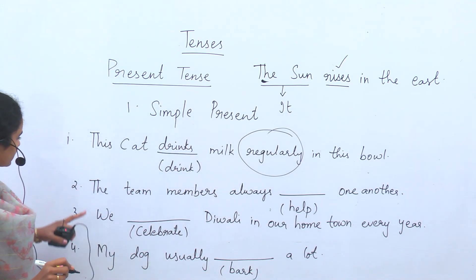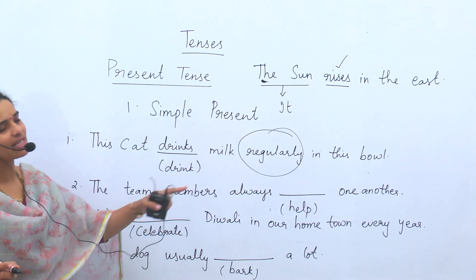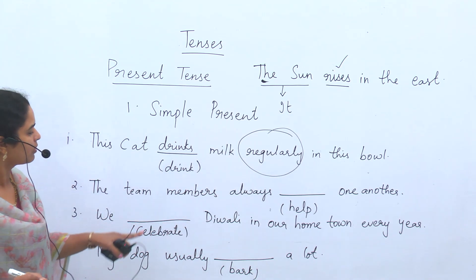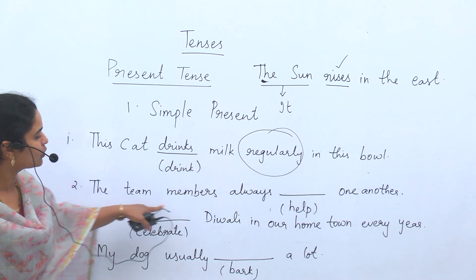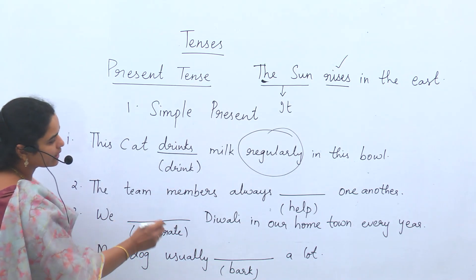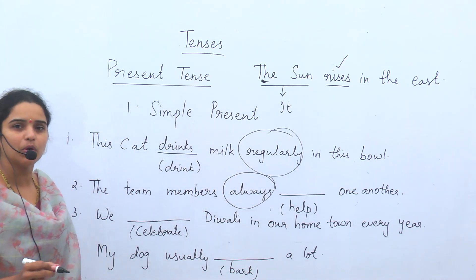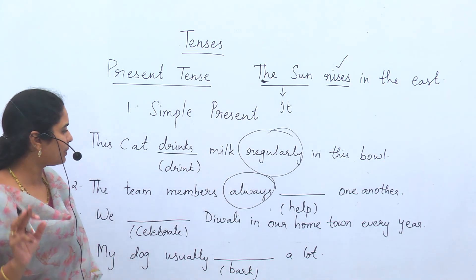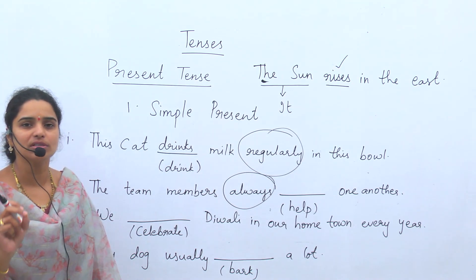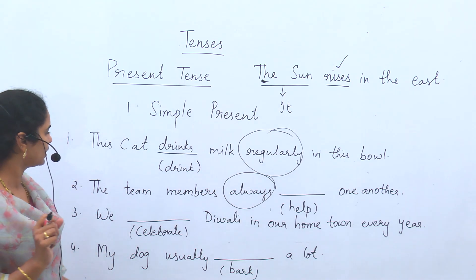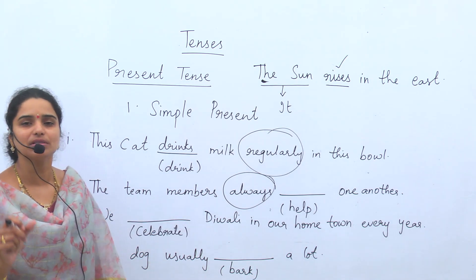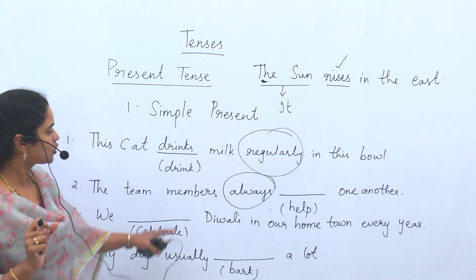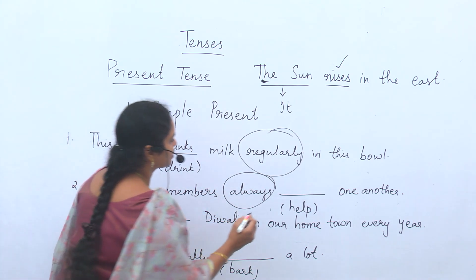The next sentence: 'The team members always ___ one another.' The clue word is 'always' — so the sentence is simple present tense. Should we use 'help' or 'helps'? Let's look at the subject — the team members. Members — they are represented by 'they'. So only 'help' without S. The answer is 'help': 'The team members always help one another.'